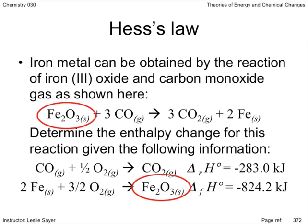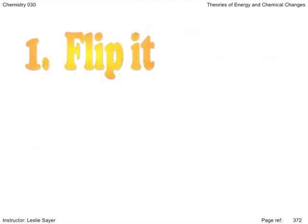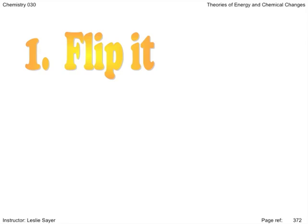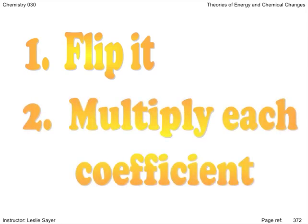As is frequently the case with Hess's law questions, you will need to manipulate the given equations before adding them to get the required net equation, also called the target equation. There are two ways to manipulate equations. First, you can flip it, so reactants become products and products become reactants. And second, multiply the coefficients by a factor that changes the mole amounts of the reactants and products.